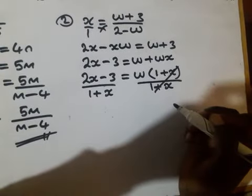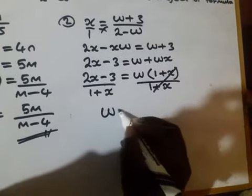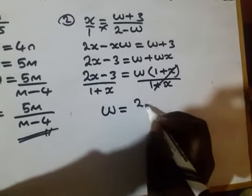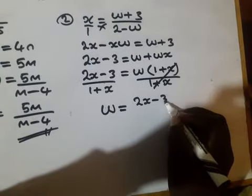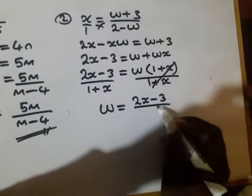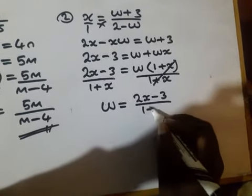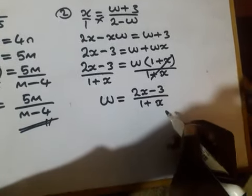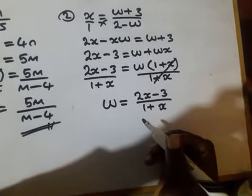Then you cancel 1 plus x and 1 plus x, so it will be w equals 2x minus 3 over 1 plus x as the final answer.